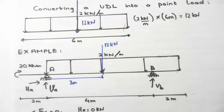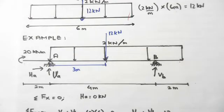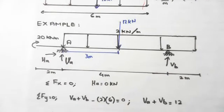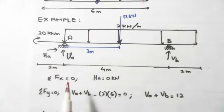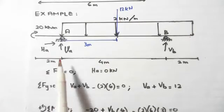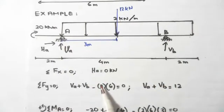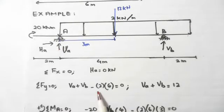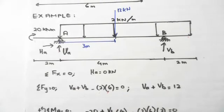The reason we convert a UDL into a point load is that when we add forces, we can't add kilonewtons with kilonewtons per meter — we need consistent units. First, sum of forces in the x direction equals zero. We have a pin with a vertical and horizontal restraint, and a roller with one vertical restraint. Since HA is the only horizontal force, HA equals zero. Next, sum of forces in the y direction: VA plus VB minus two times six equals zero, because the UDL points downward. This gives VA plus VB equals 12.